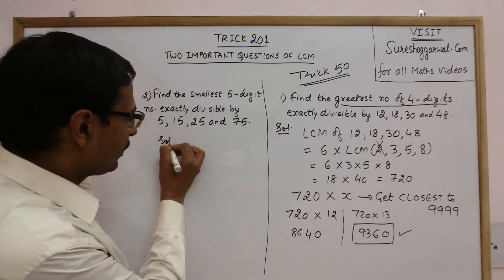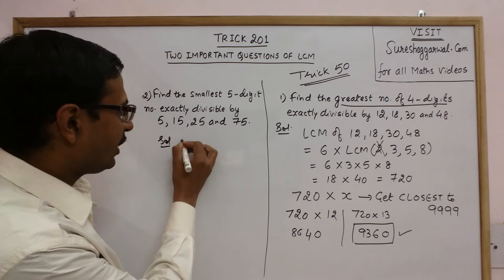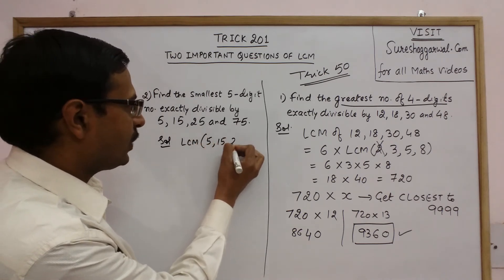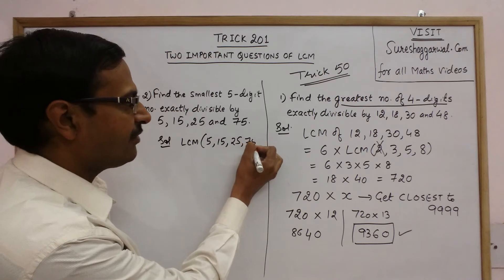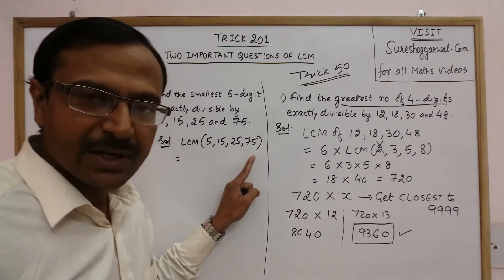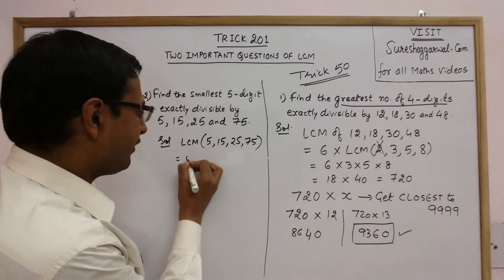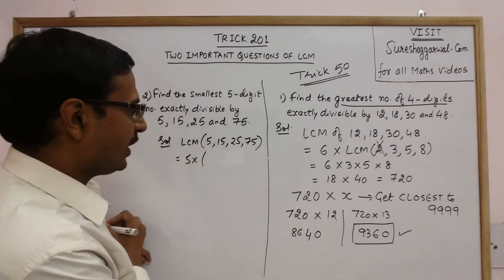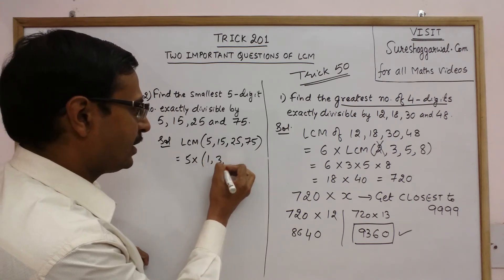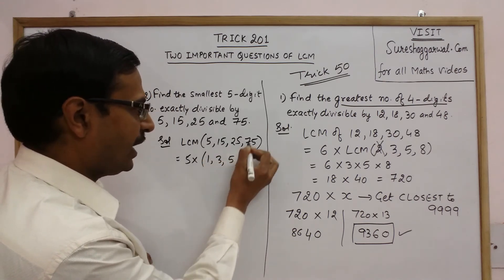So just now I told you our solution will include finding the LCM of 5, 15, 25 and 75. Now here you see obviously these four numbers are divisible by 5 so take 5 out. So you are left with 1, 3, 5 and 15.